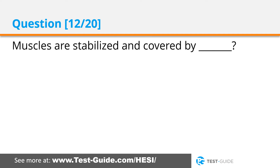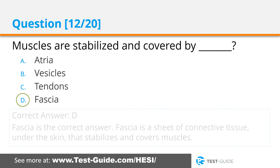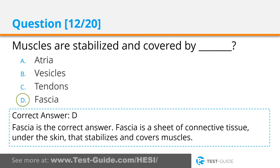Question twelve: Muscles are stabilized and covered by what? Options: atria, vesicles, tendons, fascia. Correct answer D. Fascia is the correct answer. Fascia is a sheet of connective tissue under the skin that stabilizes and covers muscles.